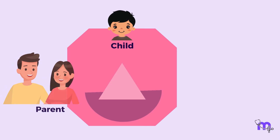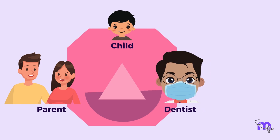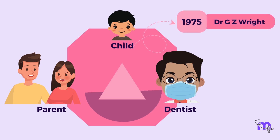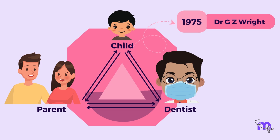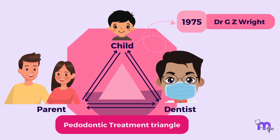In the case of children, parents play a very important role in helping the child bond with the dentist. This relationship was described in the year 1975 by Dr. G. Z. Wright in the form of an equilateral triangle called the periodontic treatment triangle.